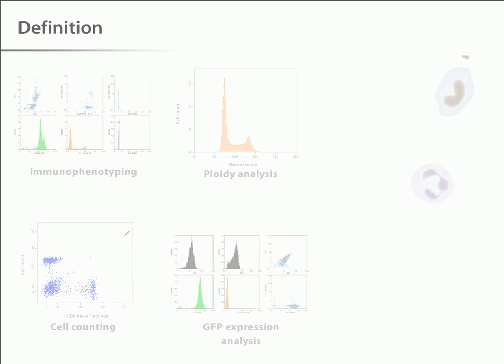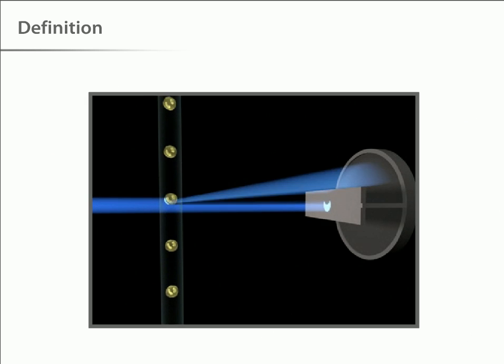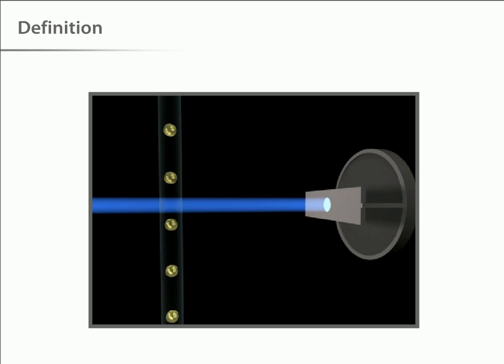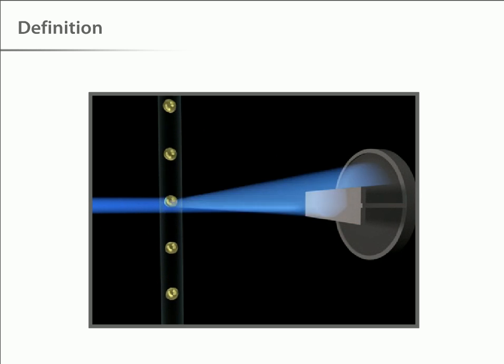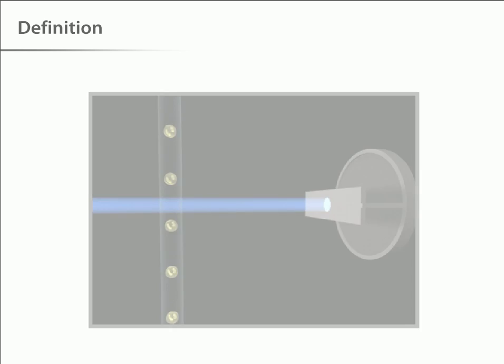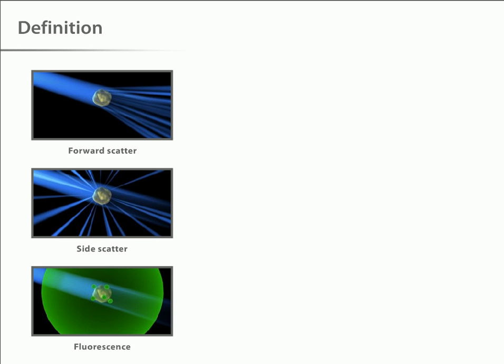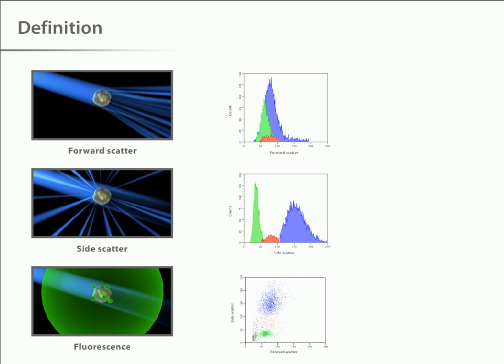The flow cytometer performs this analysis by passing thousands of cells per second through a laser beam and capturing the light that emerges from each cell as it passes through. The data gathered can be analyzed statistically by flow cytometry software to report cellular characteristics such as size, complexity, phenotype, and health.